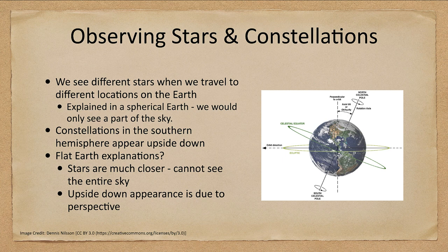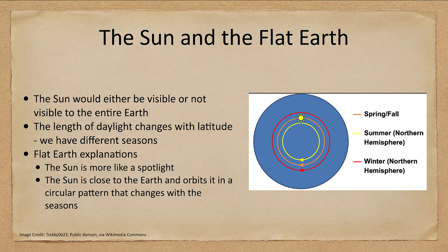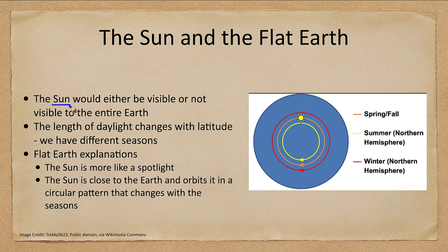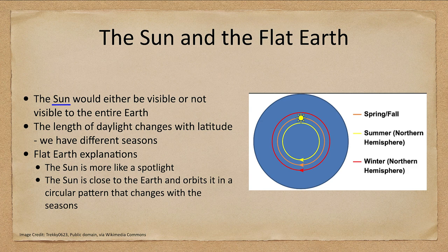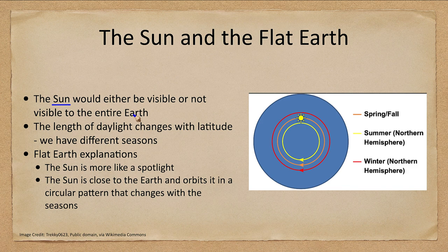How about the sun and the seasons? We can look at those. Wouldn't we think that if the Earth were flat, the sun would either be visible or not visible to the entire Earth at once? Why would we be able to see the sun if the Earth is flat? The sun should be up and everyone should see it, or it should be on the other side of the flat Earth and we would never be able to see it. The explanation is that the sun is more of a spotlight.